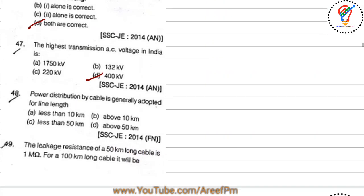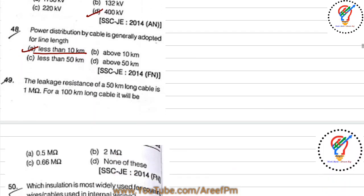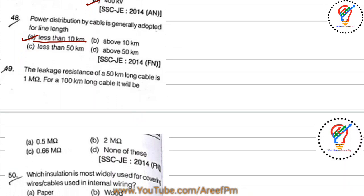Question 48: power distribution by cable is generally adopted when the line length is less than 10 kilometers. Question 49: the leakage resistance of a 50-kilometer-long cable is 1 mega ohm; for a 400-kilometer-long cable it will be 0.05 mega ohms — a similar inverse-proportionality problem.